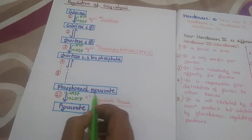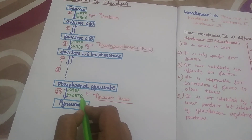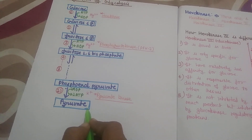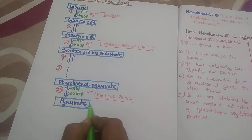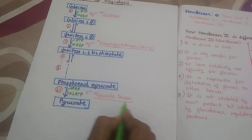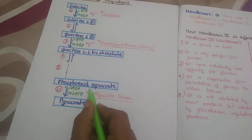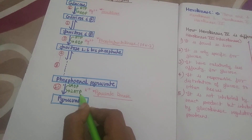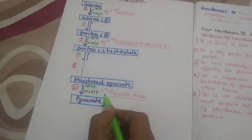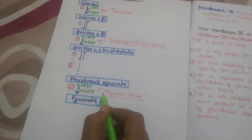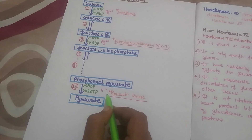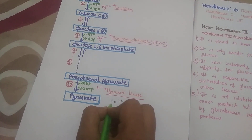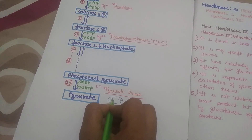The last enzyme and the last regulatory step is the 10th step of glycolysis, in which Phosphoenolpyruvate is converted into Pyruvate. This reaction is catalyzed by the enzyme Pyruvate Kinase. In this step, ADP is converted into ATP — that is, ATP is generated — and potassium ion acts as a cofactor. In some microorganisms, manganese ion also acts as a cofactor.